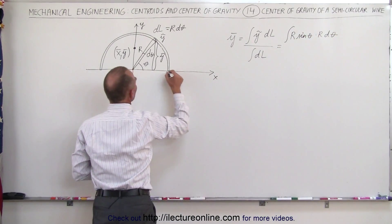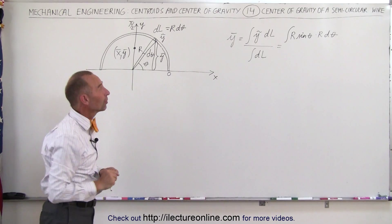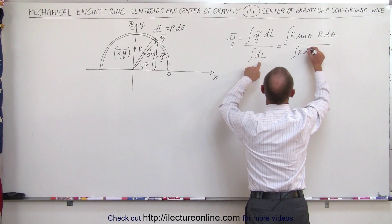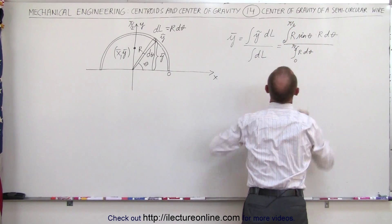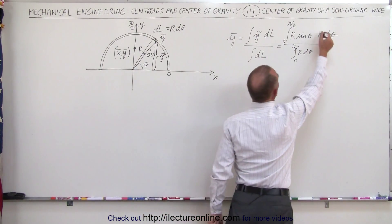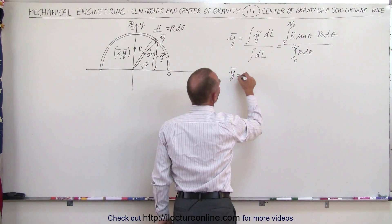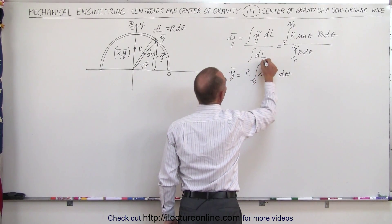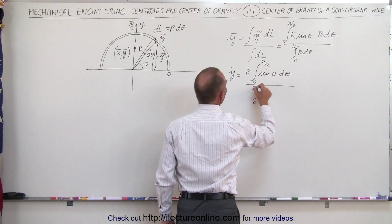We're going to integrate from 0 to pi over 2 — just halfway, because there's perfect symmetry on both sides. Dividing by the integral of dl, which is r times d theta, also from 0 to pi over 2. Notice that r is a constant that can come out: there's one r in the numerator and one r in the denominator, which cancel. So y-bar equals r times the integral of sine of theta d theta from 0 to pi over 2, divided by the integral of d theta from 0 to pi over 2.